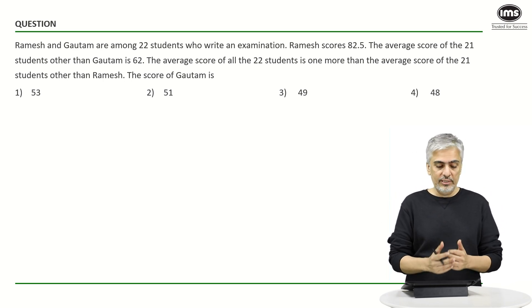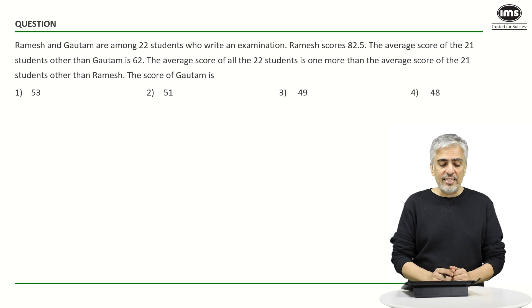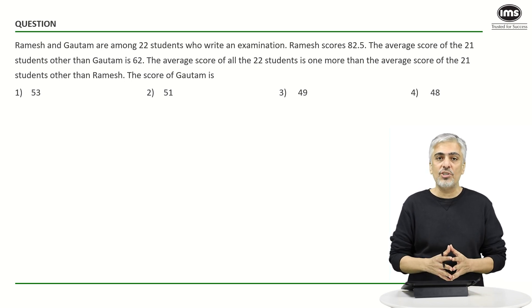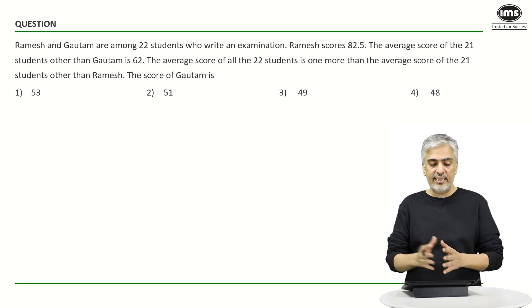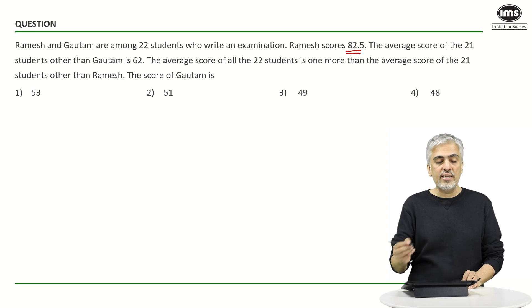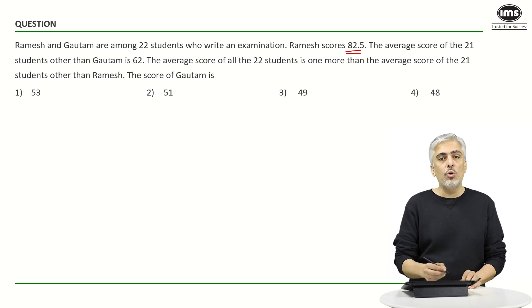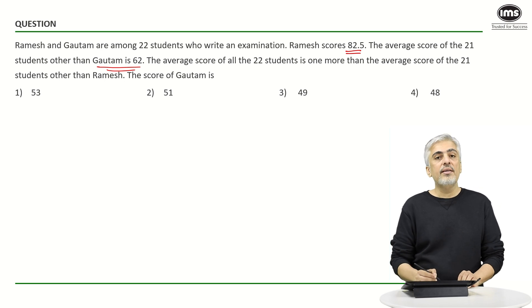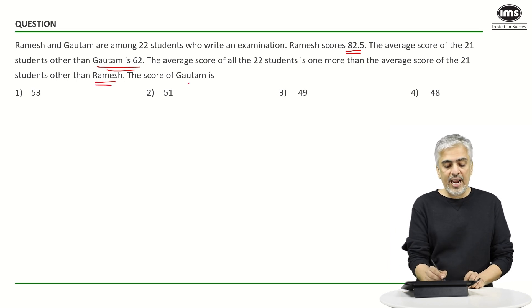So they've told us Ramesh and Gautam are amongst 22 students who are writing an examination, that means there are 20 others beside these two. Ramesh scores 82.5, and the average score of the 21 other students excluding Gautam is 62. The average score of all the 22 students is one more than the average score of 21 students other than Ramesh, and we've been asked the score of Gautam.